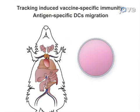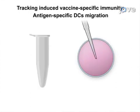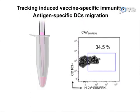Next, cells are harvested from the lymph nodes of vaccinated mice, and FACS analysis is used to track dendritic cell migration.